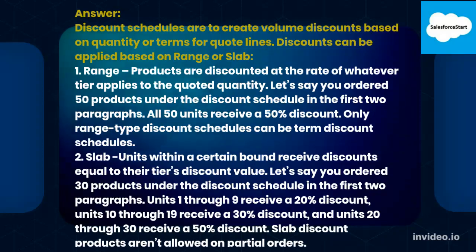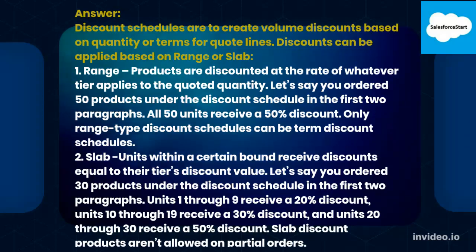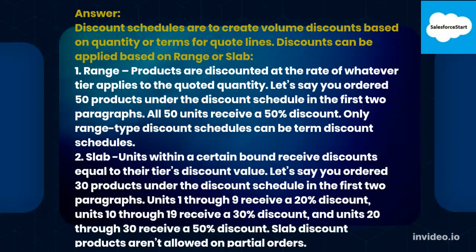Only range type discount schedules can be termed discount schedules. 2. Slab: Units within a certain bound receive discounts equal to their tier's discount value. For example, if you ordered 30 products: units 1 through 9 receive a 20% discount, units 10 through 19 receive a 30% discount, and units 20 through 30 receive a 50% discount. Slab discount products aren't allowed on partial orders.